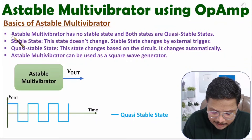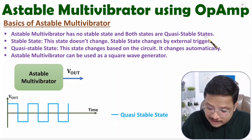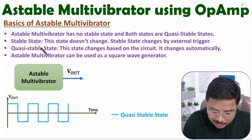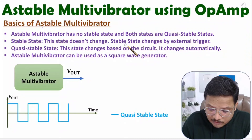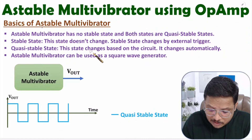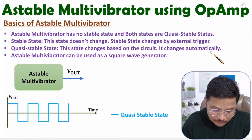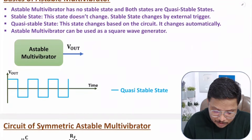The astable multivibrator has no stable state — both states are quasi-stable. A stable state doesn't change on its own; to change it, we need an external trigger. But a quasi-stable state changes based on the circuit automatically. So the astable multivibrator can be used as a square wave generator.